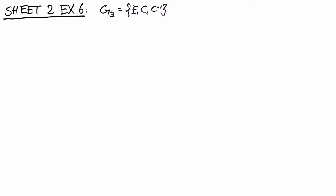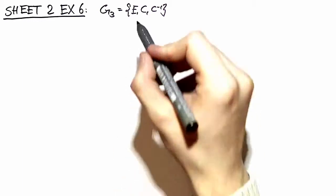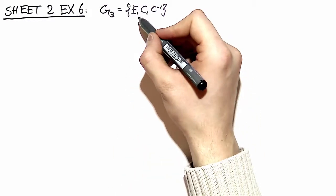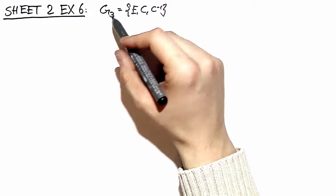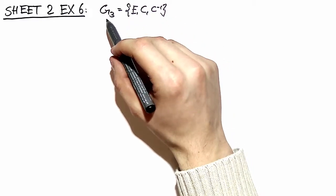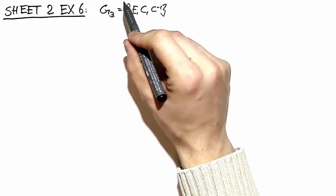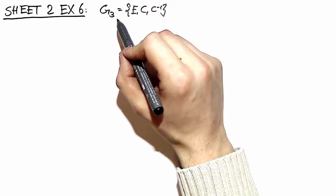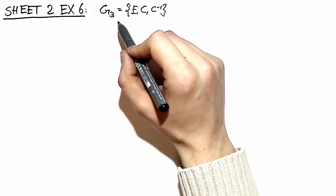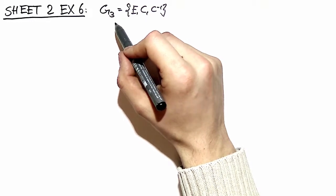Hello again, welcome to the solution of exercise 6, problem sheet 2. Here we are investigating the most general three-element group, we call it G3, and we want to see how this group behaves and maybe find a geometric interpretation of this group.